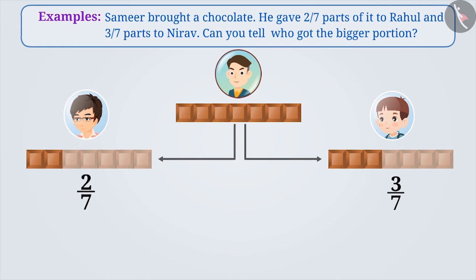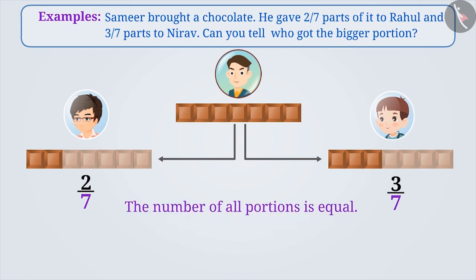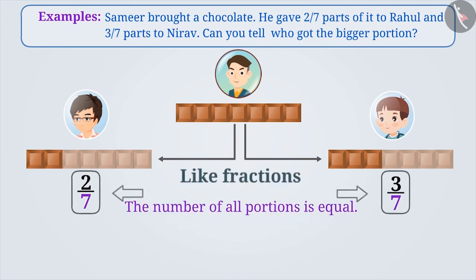Rahul got 2 by 7 parts of the chocolate and Nirav got 3 by 7 parts. The denominators of both fractions are the same, which means the total number of parts is the same. Therefore, both of these fractions are like fractions.